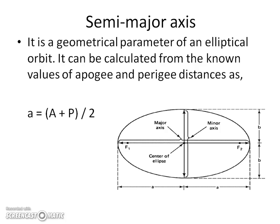Semi-major axis is a geometric parameter of an elliptical orbit. It can be calculated from the known values of apogee and perigee distances as: a = (A + P) / 2, where capital A is the apogee distance and capital P is the perigee distance — that is, the summation of apogee plus perigee divided by 2.